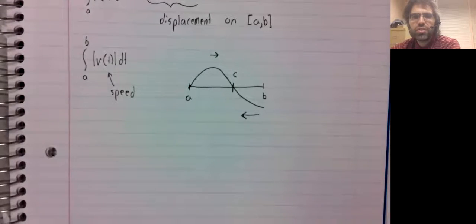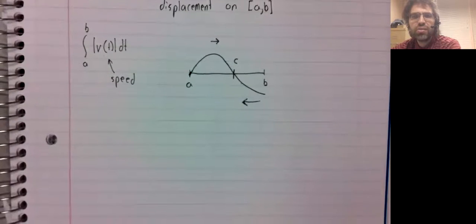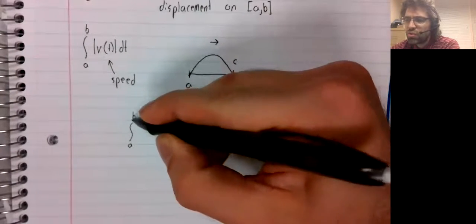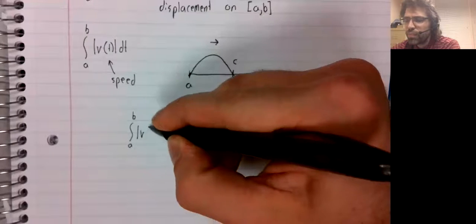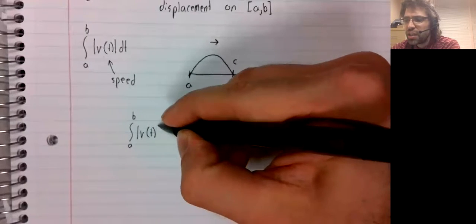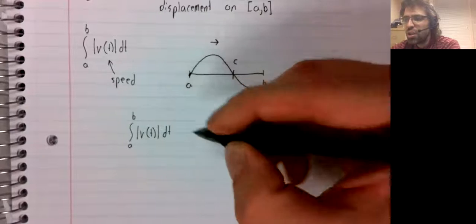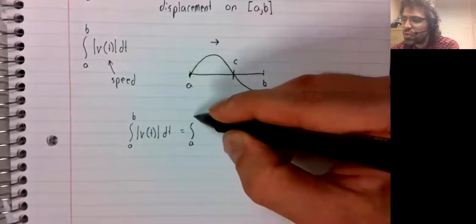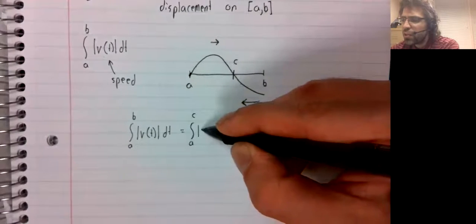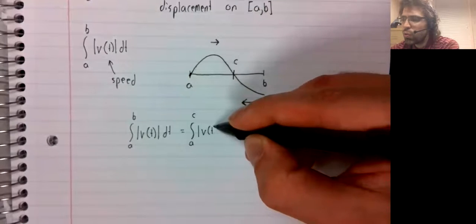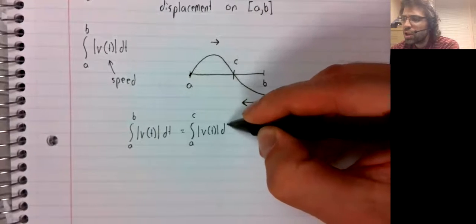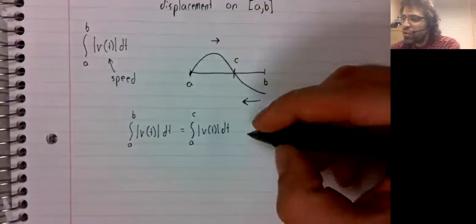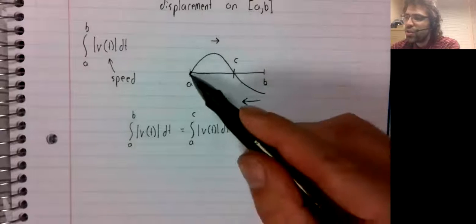Let's call this point where the sign switches C. And let's make use of a fact which we have stated before, but not until now had cause to use: that we can break integrals up like so. The integral from A to B is the integral from A to C plus the integral from C to B.